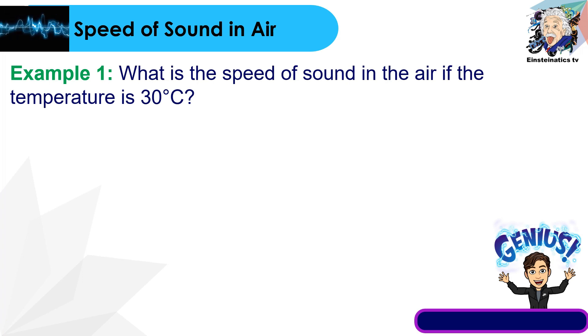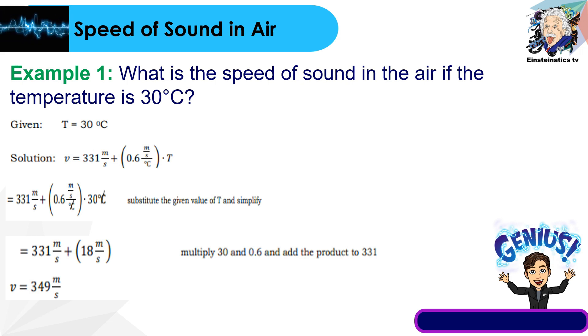This time, let us try to compute for the speed of sound in air. Let's have example number 1. What is the speed of sound in air if the temperature is 30 degrees Celsius? We are going to use the formula. Given the temperature is 30 degrees Celsius, the solution is: speed equals 331 meters per second plus 0.6 meters per second over degree Celsius times temperature. Substitute 30 degrees Celsius for the temperature and cancel out the measurement. 331 plus 18 by multiplying 30 with 0.6 gives us 18. So 331 plus 18 equals 349 meters per second. The speed of sound in air at 30 degrees Celsius is approximately 349 meters per second.